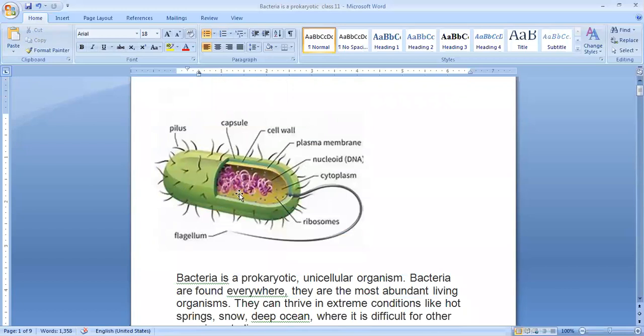If we talk about the structure, a bacterial cell is covered by outer slime layer or capsule. You can see over here the outermost layer which is called as capsule or slime layer. Then the middle layer is called as cell wall and the inner layer, inner membrane, that is plasma membrane.